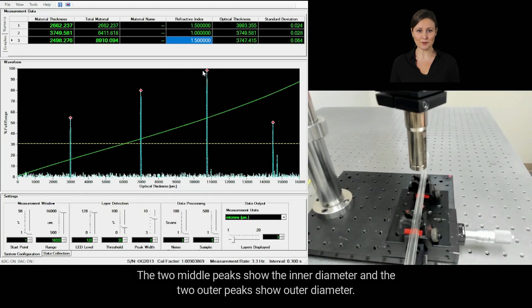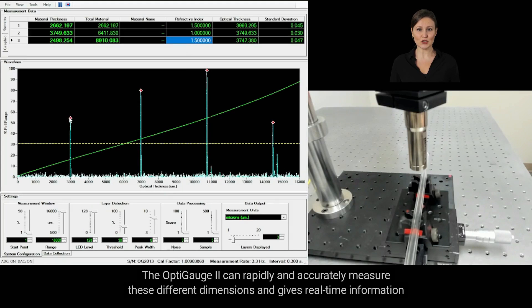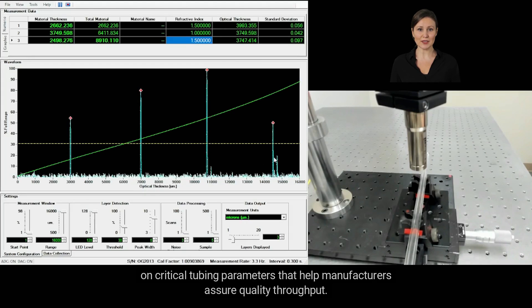The two middle peaks are the inner diameter, and the two outer peaks show outer diameter. The OptiGage 2 can rapidly and accurately measure these different dimensions and gives real-time information on critical tubing parameters that help manufacturers assure quality throughput.